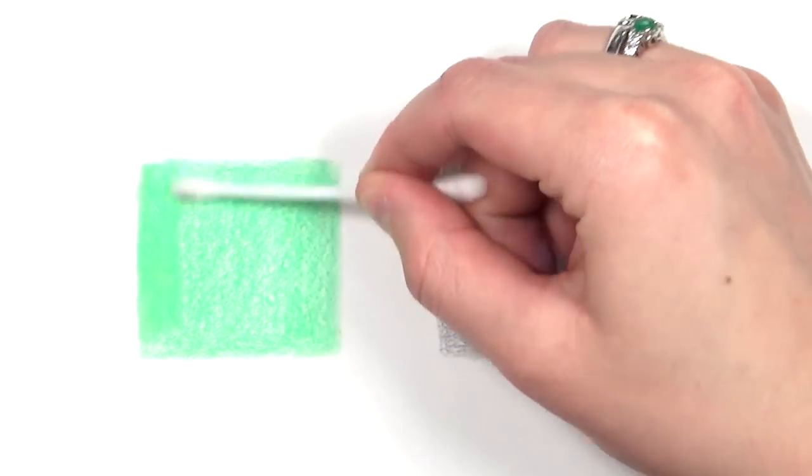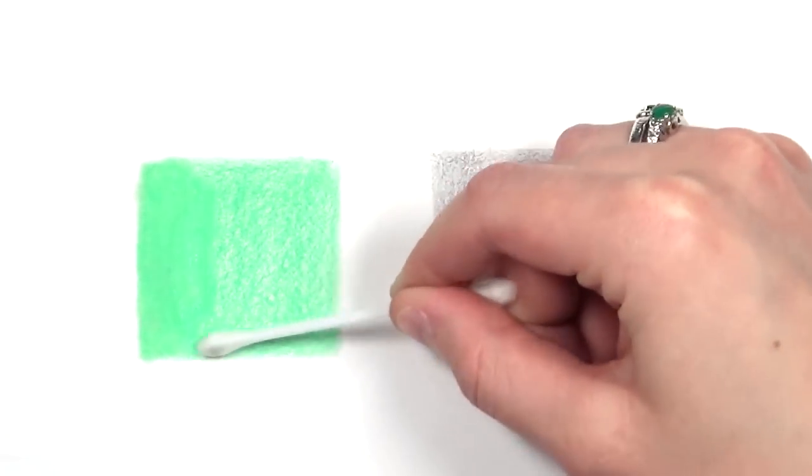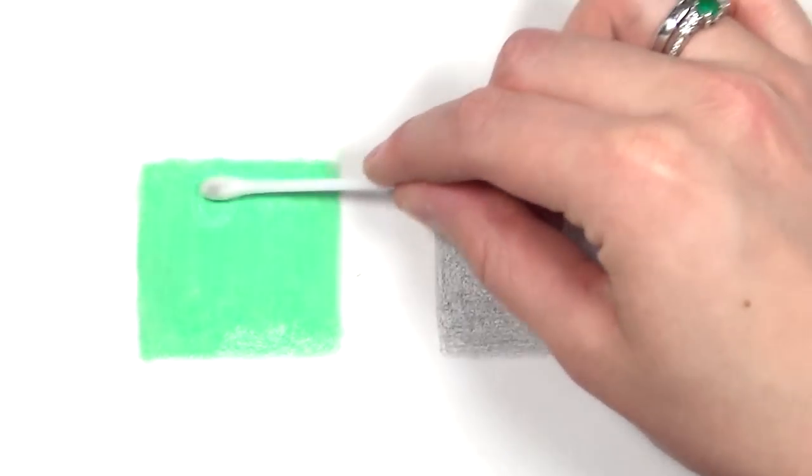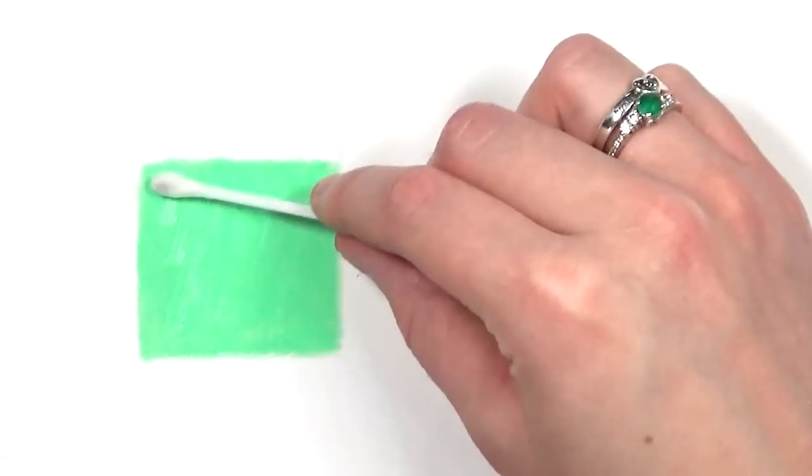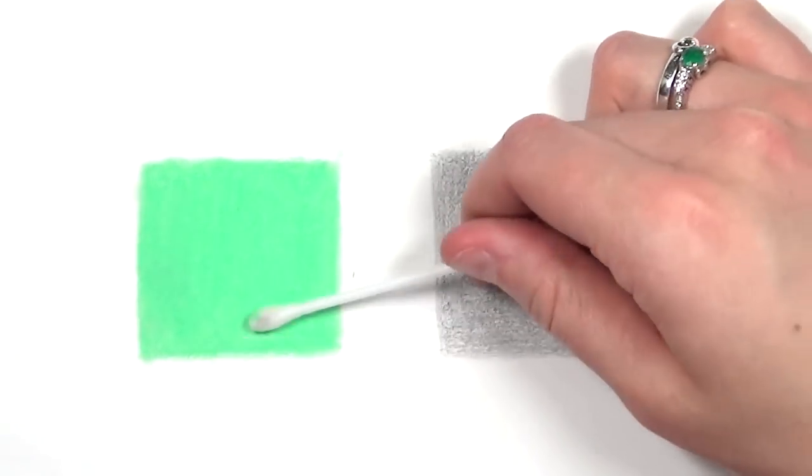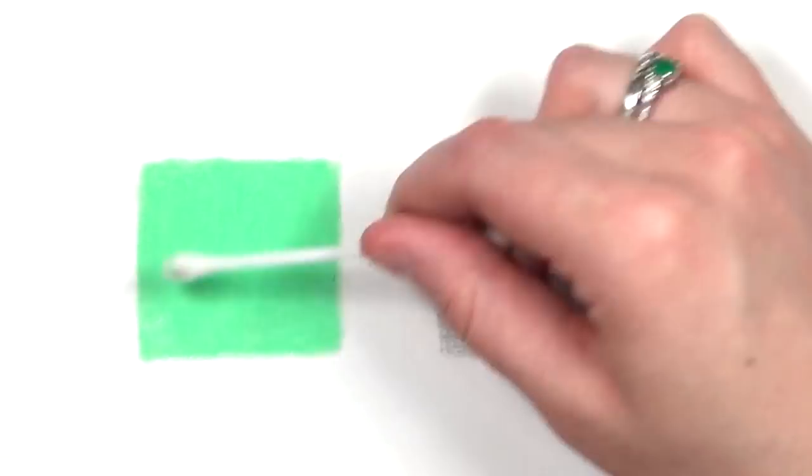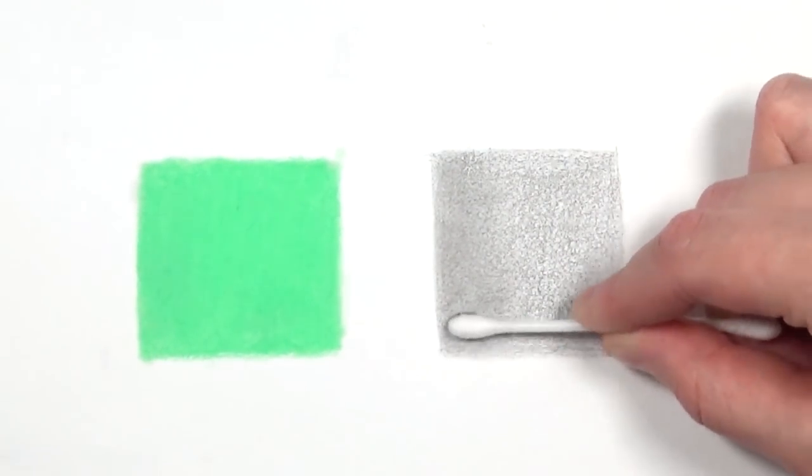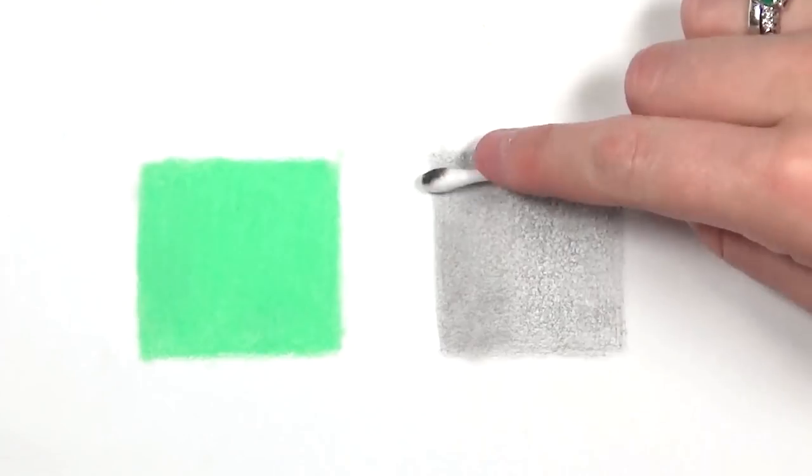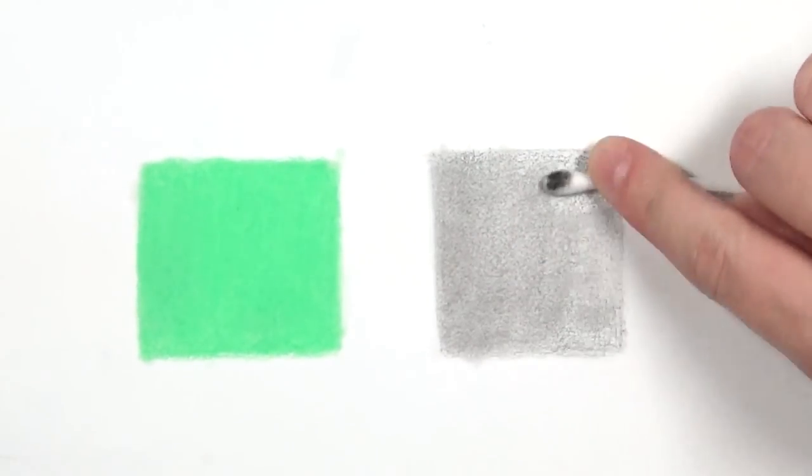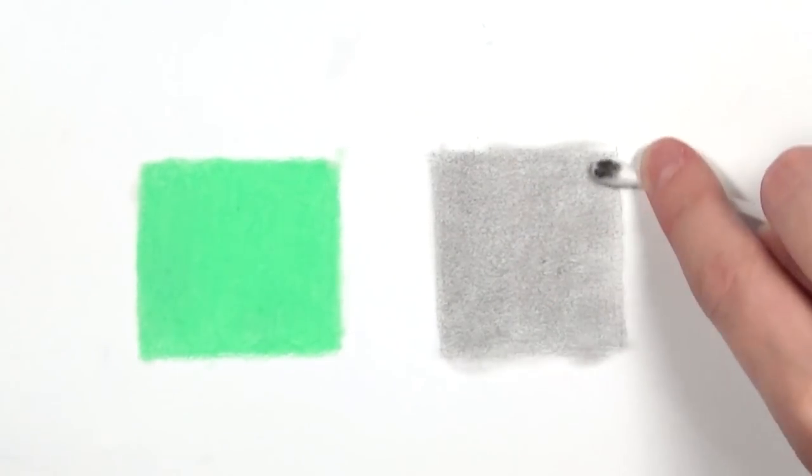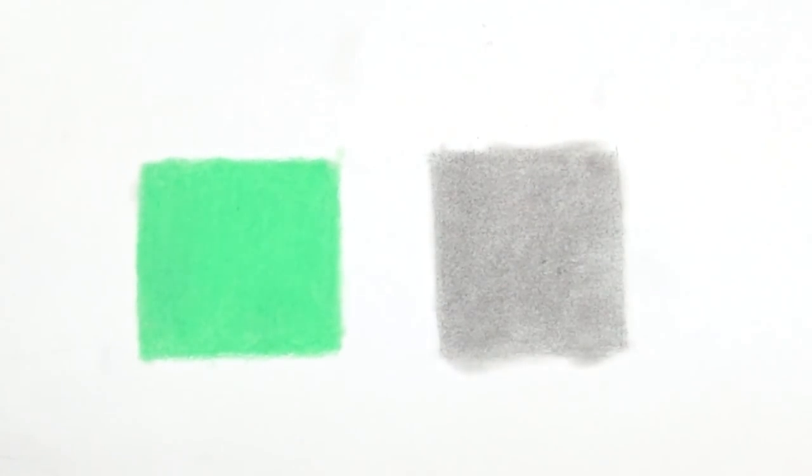Tip number two is to help you save money on your blending supplies. When I normally blend color pencil I like to use a paintbrush, but you can use a cotton bud and you can use this to also blend graphite. Another good thing to use for blending graphite is tissue as well. You don't need to have tortillons and stumps and all these different methods of blending.